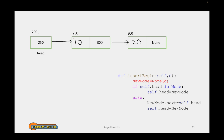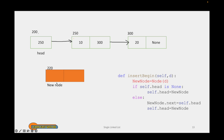Now let us see the order of execution of this program. Whenever we call insert_begin with some data value, it calls that function. A new node is created at a new memory location — for demonstration purposes I am considering it to be 220. This new node contains two portions: the first portion is the data portion and the second portion is the link portion. Whatever data value we supply will be assigned to the new node's data — for example, 25 is assigned.